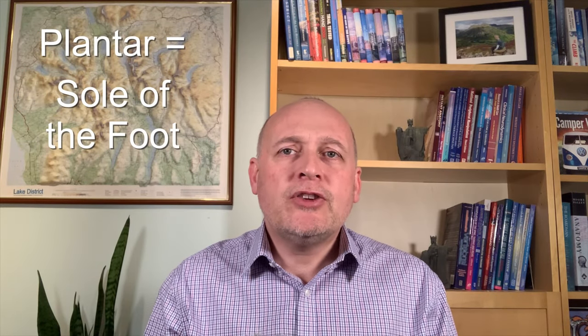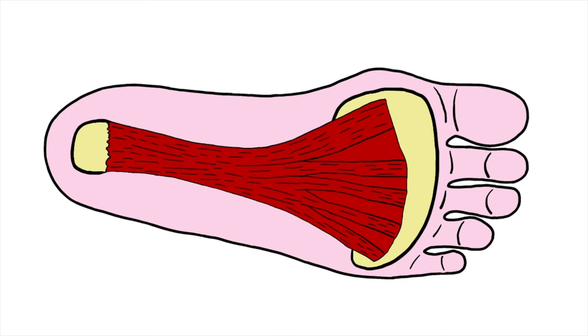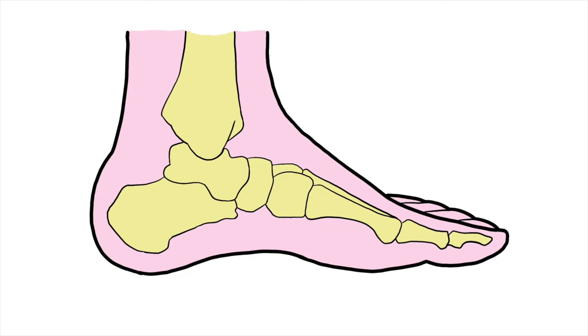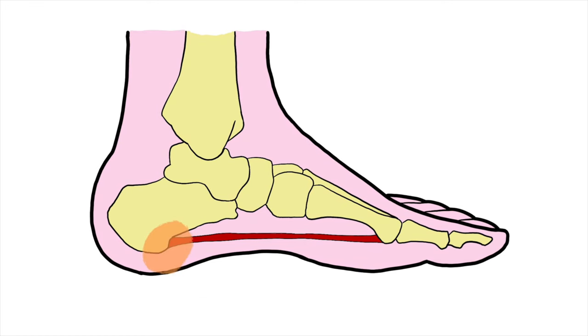The word plantar just refers to the sole of the foot, and the tissue involved in the condition is called the plantar fascia. It's a triangular shaped sheet of strong connective tissue made up of dense collagen fibers, similar to a ligament. Its apex attaches to the heel bone and its base to the forefoot, specifically the bases of all five toes. The plantar fascia has a role in maintaining the main arch of your foot, and when it becomes overloaded it can cause symptoms usually at the point where it attaches to the heel bone.